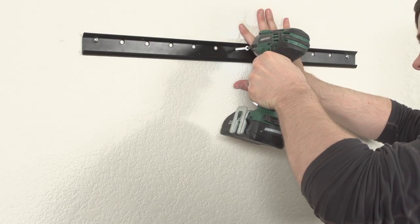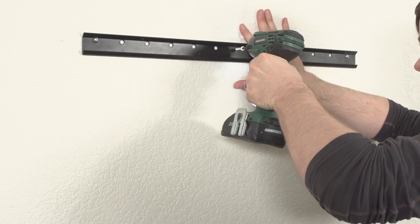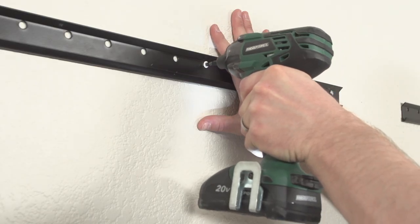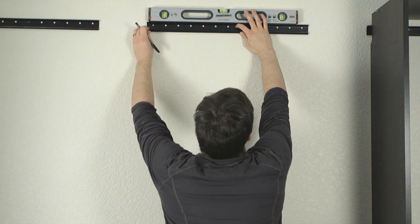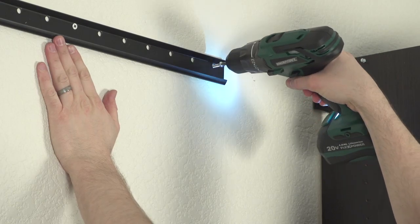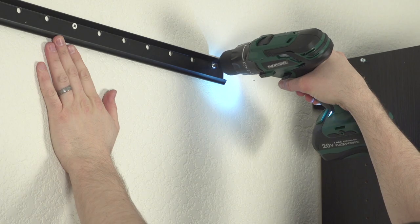Using the fastener pack provided, attach the hang rail with the lip facing forward to the wooden studs with two and a half inch wood screws. Use the level for proper installation. A minimum of three fasteners should be used to fasten the hang rail to the wall.